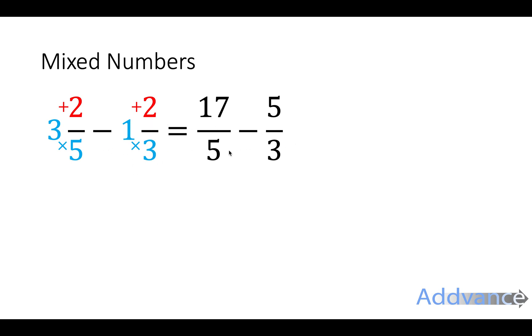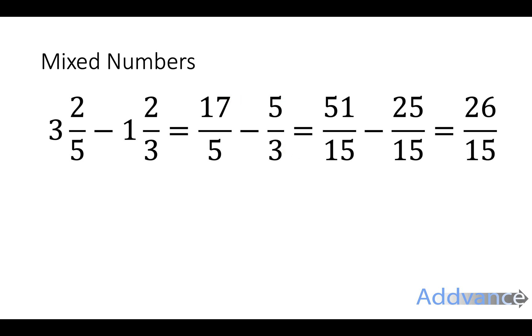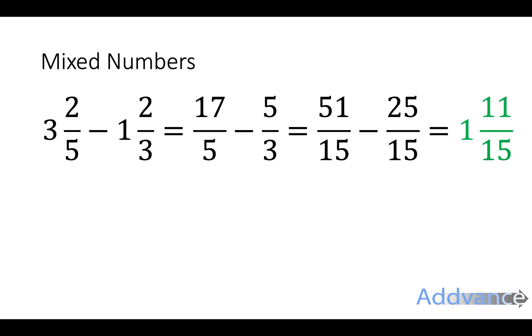Now I'm going to times by 3, times by 3, times by 5, times by 5 to get 15 as the common denominator. Finally, I just subtract the top. 51 minus 25 is 26 fifteenths. Now, I need to convert this into a mixed number. So 26 divided by 15 is 1, remains 11. So the answer is 1 and 11 fifteenths.